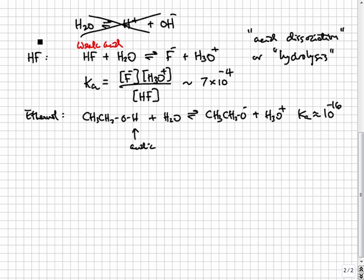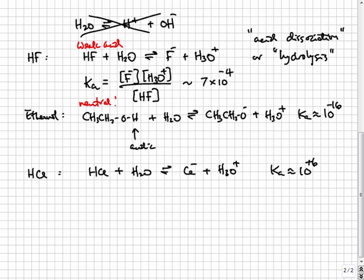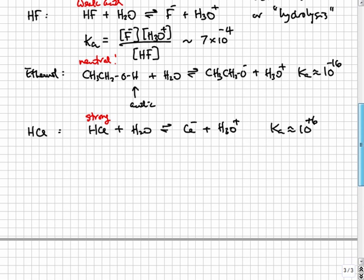But its Ka is about 10 to the minus 16. So as an acid, ethanol is weaker than water itself and is therefore practically neutral. We can contrast this to a strong acid like HCl. A strong acid has a very large Ka. The Ka of HCl is close to 10 to the sixth power. This Ka is so strong that every HCl molecule that touches water dissociates completely and there are no intact HCl molecules in the solution. If you put X moles of HCl in water, you will get a solution with X moles of H3O+ and X moles of Cl-.